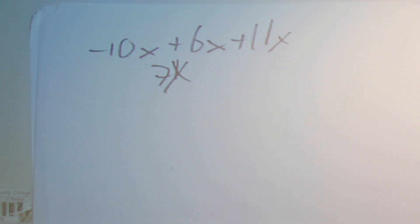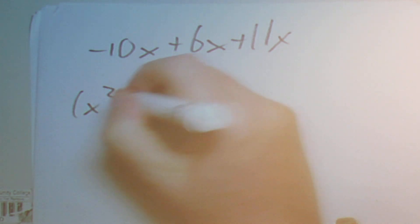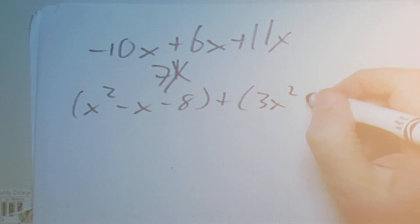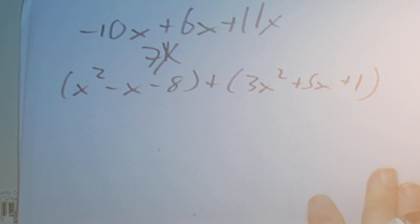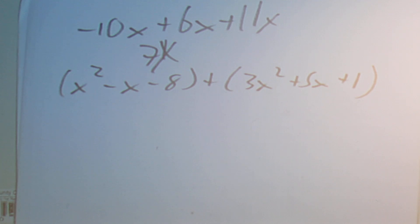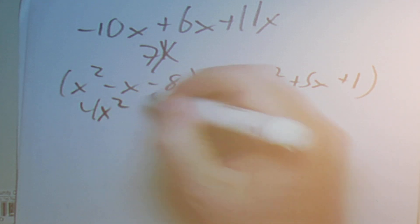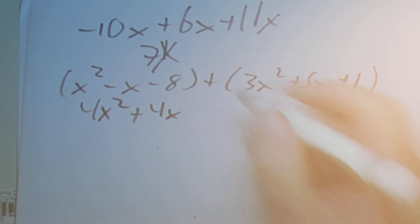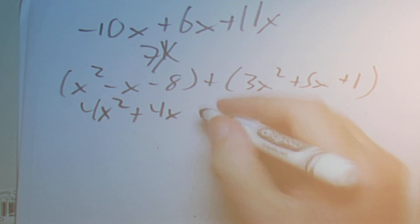Next we're going to add two polynomials. Let's say we have x squared minus x minus 8, plus 3x squared plus 5x plus 1. To add polynomials, we'll just pretend the parentheses aren't there. x squared plus 3x squared is 4x squared, negative x plus 5x is plus 4x, and minus 8 plus 1 is minus 7.